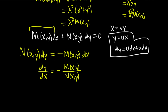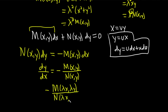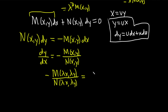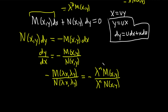Assuming this is a homogeneous DE, M and N are homogeneous of the same degree. So −M(x,y)/N(x,y) is the same as −M(λx, λy)/N(λx, λy), because if both are homogeneous of degree n, you get λⁿ M(x,y) on top and λⁿ N(x,y) on the bottom, and they cancel. So these two expressions are actually equal.